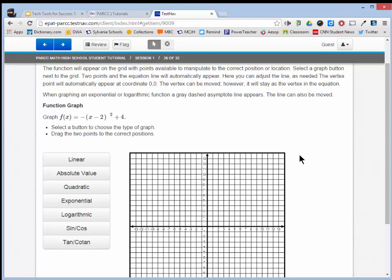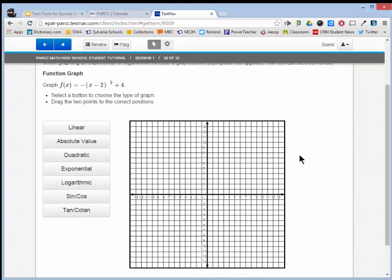Here, you can adjust the line as needed. The vertex point will automatically appear at coordinate zero. The vertex can be moved. However, it will stay as the vertex in the equation. Let's take a look.